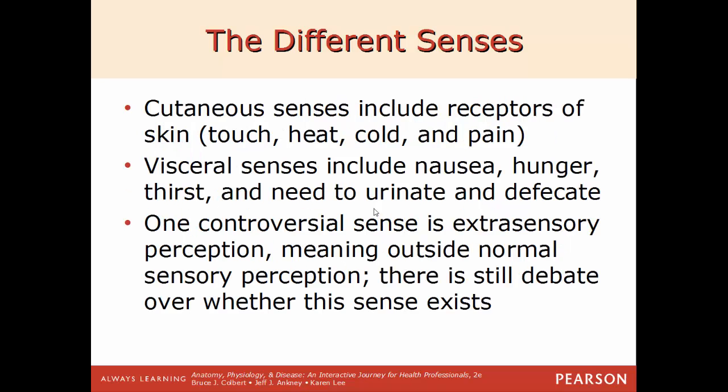The cutaneous senses include receptors for touch, heat, cold, and pain, since cutaneous refers to skin — these are the receptors found within your skin. The visceral senses include nausea, hunger, thirst, and the need to urinate and defecate. One controversial sense is extrasensory perception, or ESP, meaning perception outside the normal sensory channels — there is debate on whether or not this is really a sense.